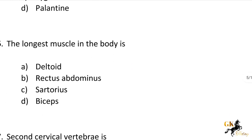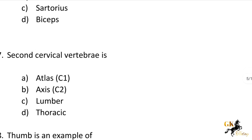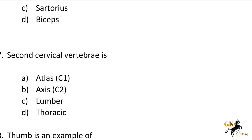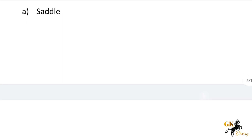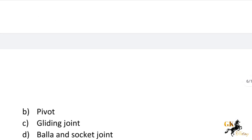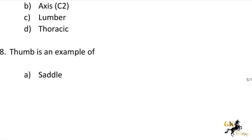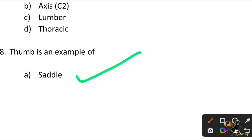Next question: The second cervical vertebra is — Options: Atlas C1, Axis C2, Lumbar, Thoracic. The second cervical vertebra is Axis C2. Next question: Thumb is an example of which type of joint? Options: Saddle, Pivot, Gliding joint, Ball and socket joint. Thumb is an example of a Saddle joint.